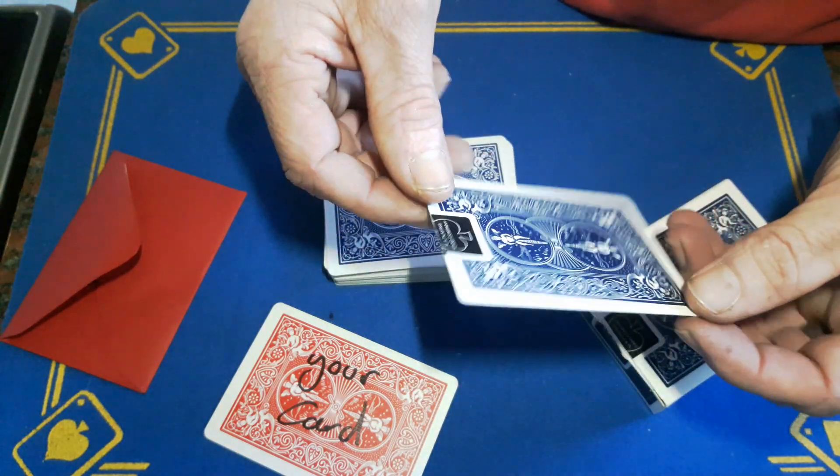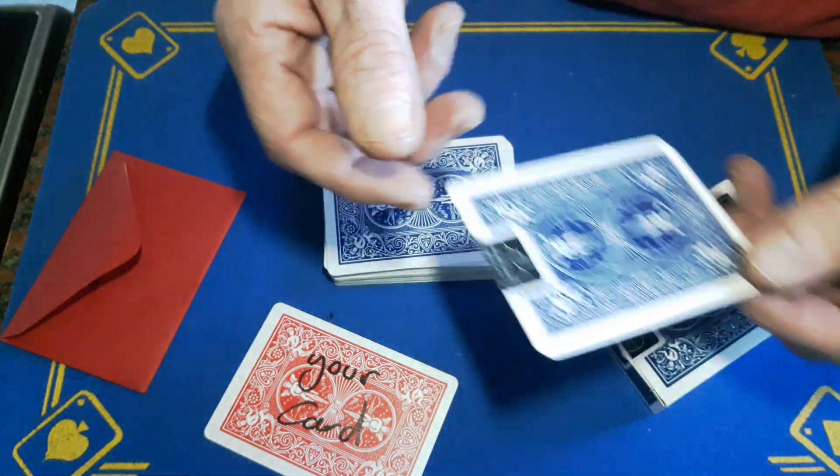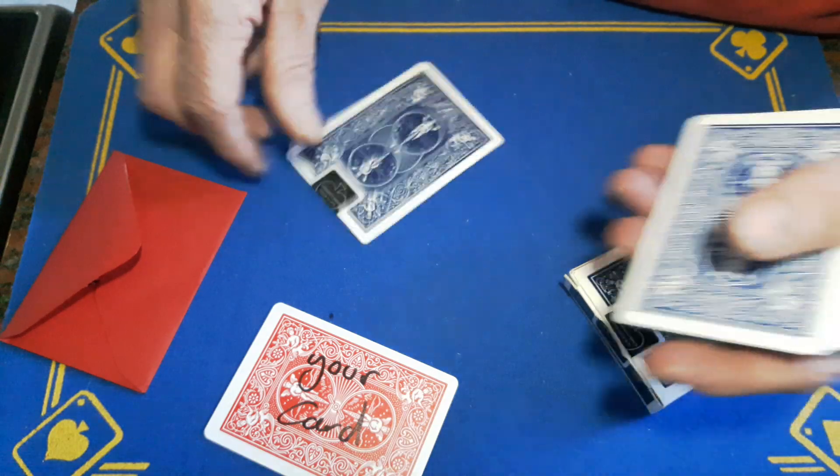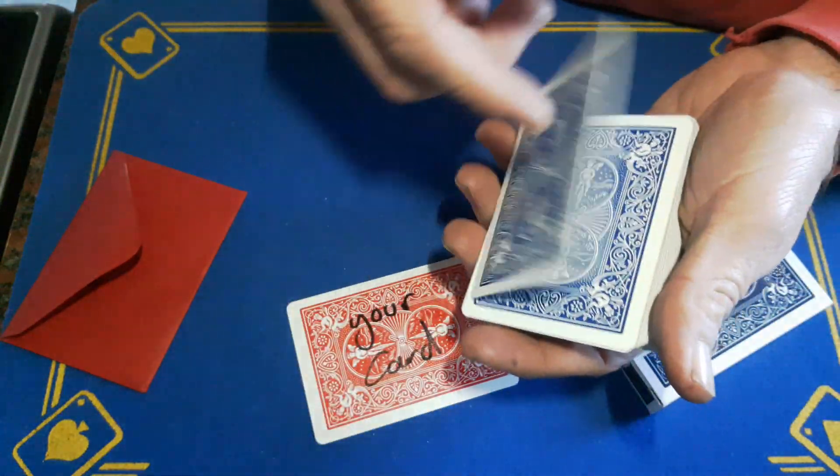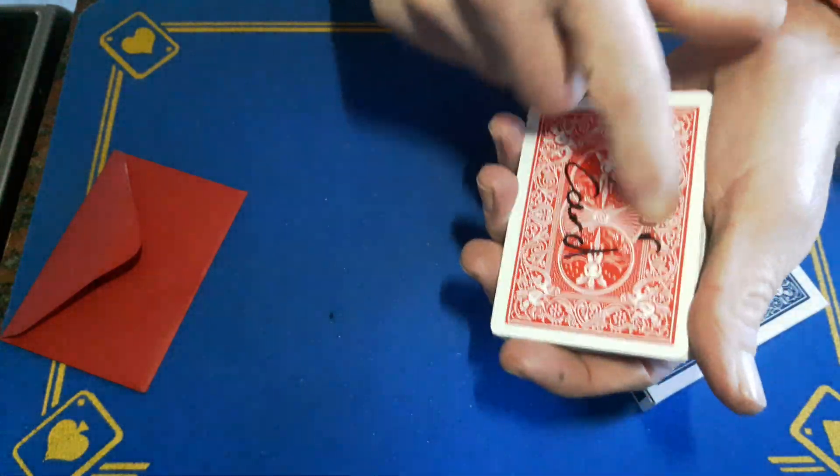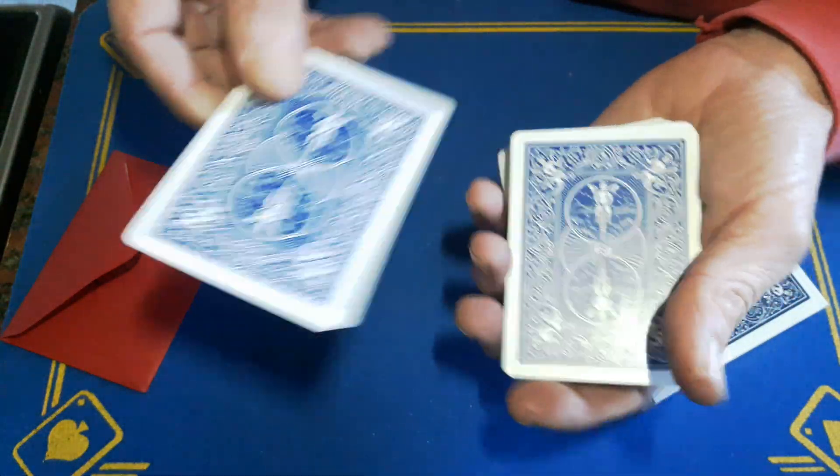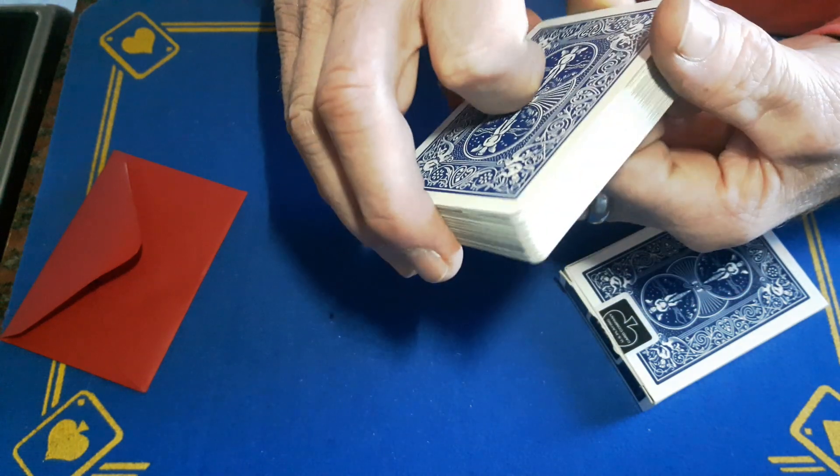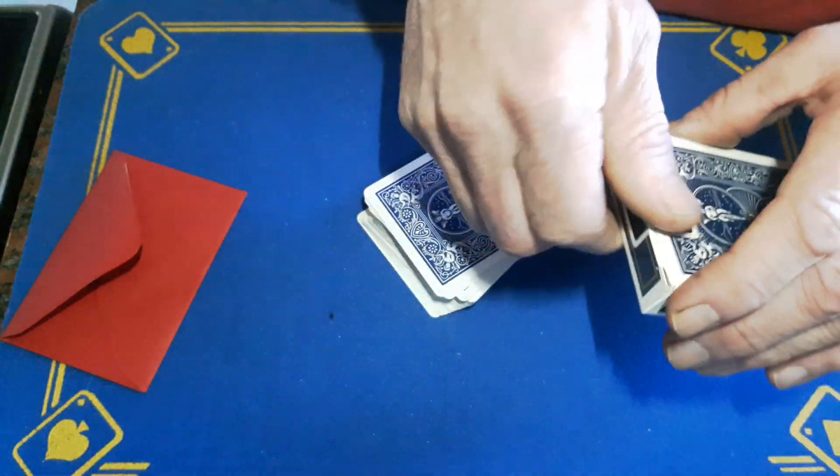I can't remember your name dude, I do apologize, but you'll know. So you're going to have your bottom of the box gaff on the top of the deck, followed by your red card with your card written on it, with two blue cards on top of that. This will all go into the box.